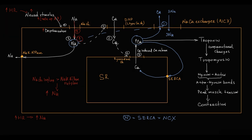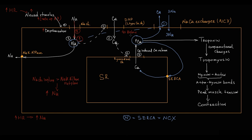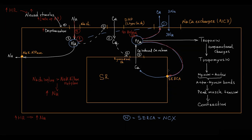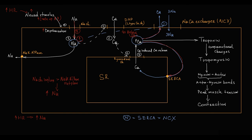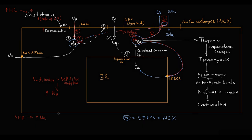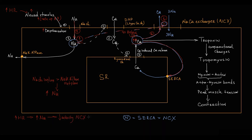When relaxation must occur, cardiomyocytes need to decrease cytosolic calcium via the sodium-calcium exchanger and the SERCA pathway. With increasing intracellular sodium concentration, the activity of the sodium-calcium exchanger decreases, causing a decrease in calcium export from the cytosol to extracellular space. So more calcium remains in the cytosol. Increased sodium concentration therefore inhibits the sodium-calcium exchanger and causes an increase in cytosolic calcium concentration.